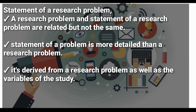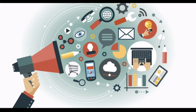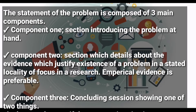Let's look at the components of statement of a research problem. The statement of a problem is composed of three main components or parts. Component one is the section that introduces the problem at hand. This section should highlight the problem as clearly as possible in a precise and concise manner.